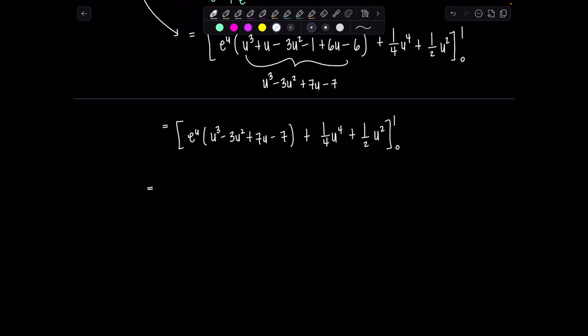Upper limit will have e to the first times (1 - 3 + 7 - 7) plus one fourth plus one half, minus lower limit which is e to the zero. That's all a bunch of zeros times negative 7 plus zero plus zero.